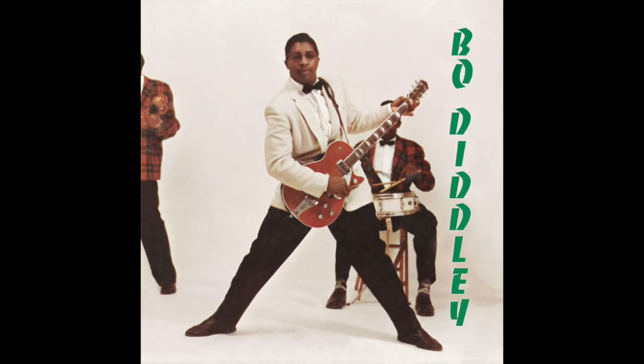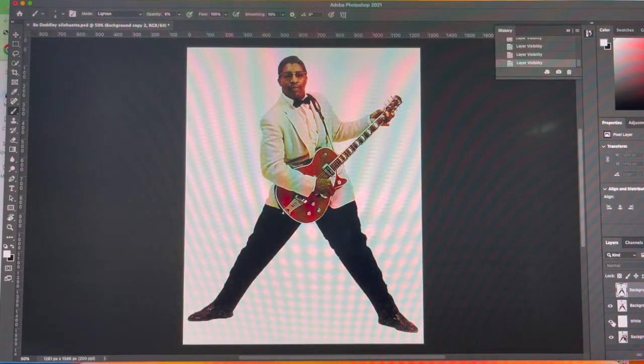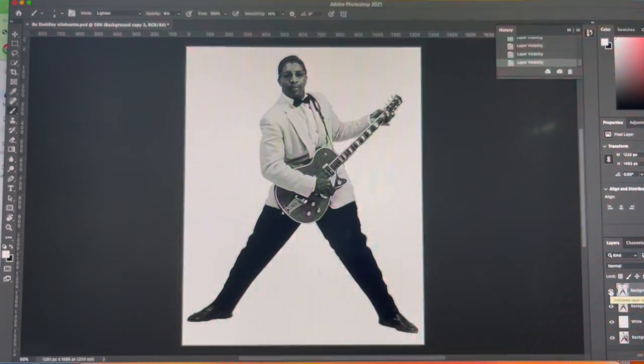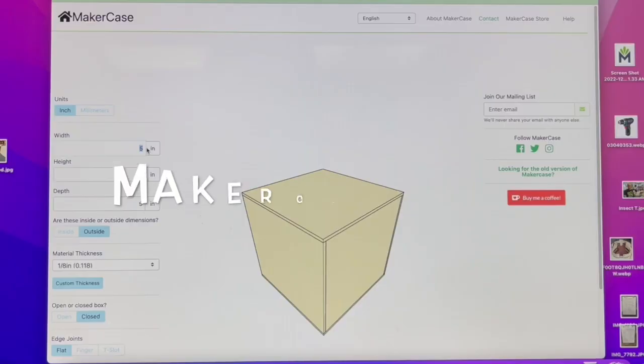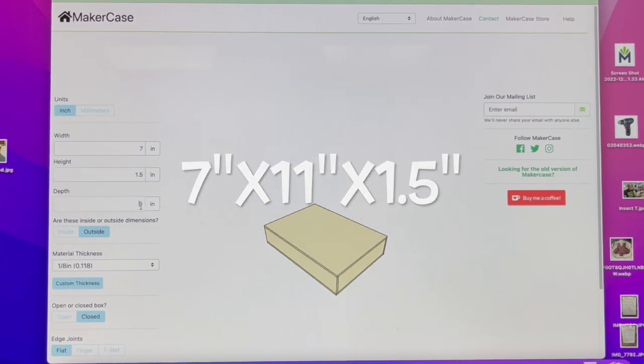The first step was to get the graphics together. I scanned Bo's album cover, removed the drummer, and optimized the contrast for laser graphics. At MakerCase.com, I designed a box measuring 7 inches tall, 11 inches wide, and 1.5 inches deep.